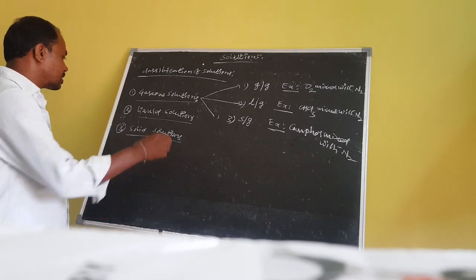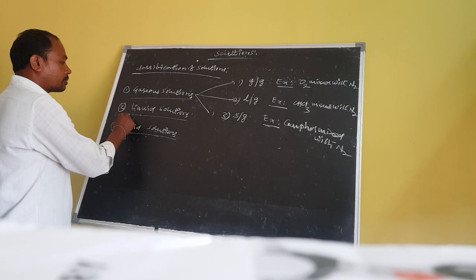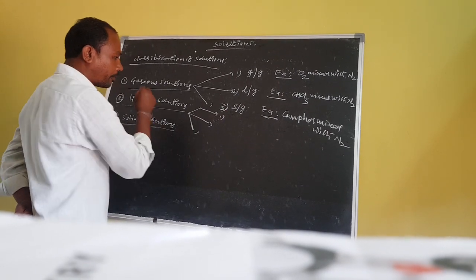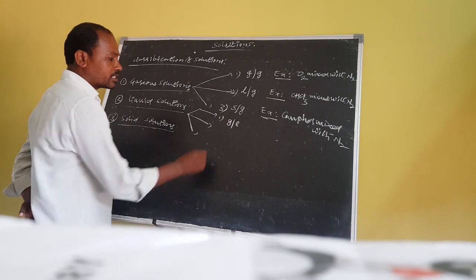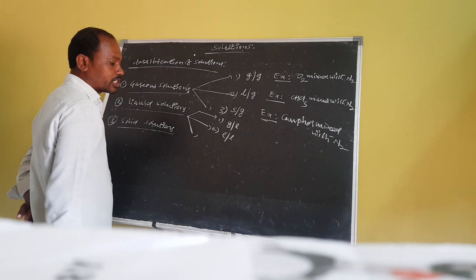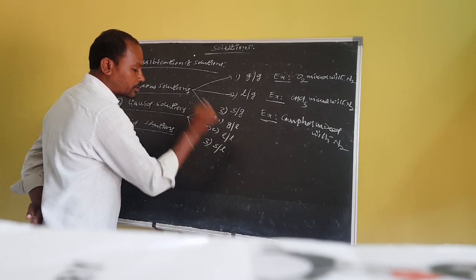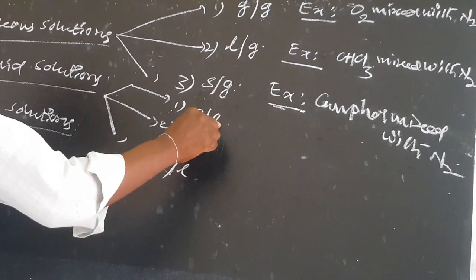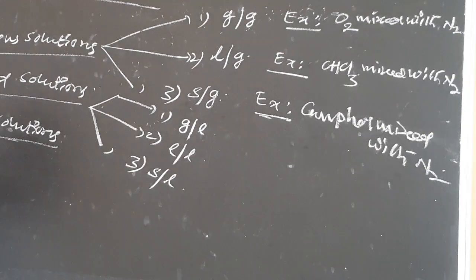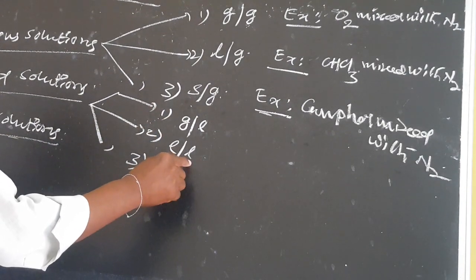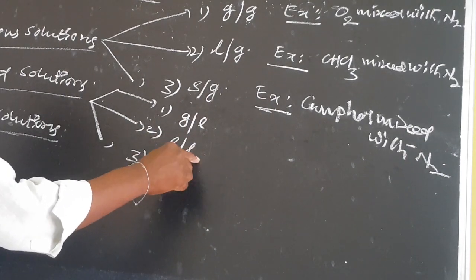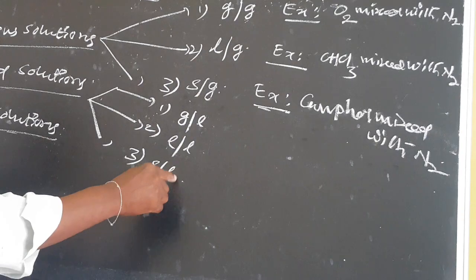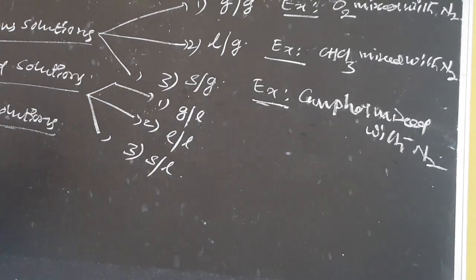Second, liquid solutions are classified into three types: number one, gas-in-liquid type solutions; number two, liquid-in-liquid type solutions; and number three, solid-in-liquid type solutions. In gas-in-liquid solutions, liquid always acts as solvent and gas acts as solute. In liquid-in-liquid solutions, liquid acts as solvent and liquid acts as solute. In solid-in-liquid solutions, liquid acts as solvent and solid acts as solute.